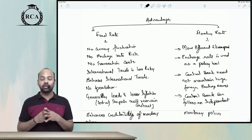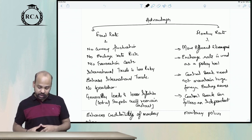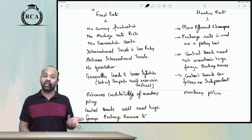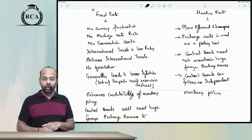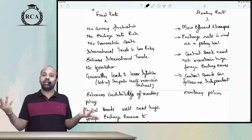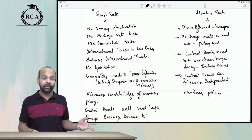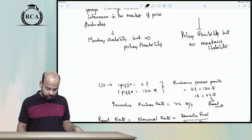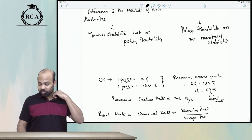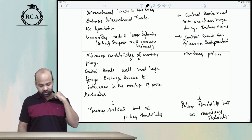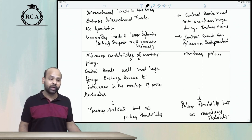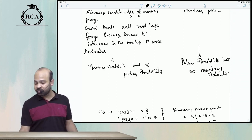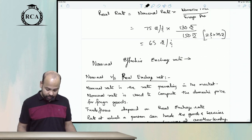A floating rate system is considered to be a more efficient and transparent system. The exchange rate can be used as a policy tool, and the central bank does not have to maintain foreign exchange reserves to intervene in the foreign exchange market since the rate is market-determined. In short, a fixed rate regime offers monetary stability but there is no policy flexibility, while a floating rate regime offers policy flexibility but there is no monetary stability.